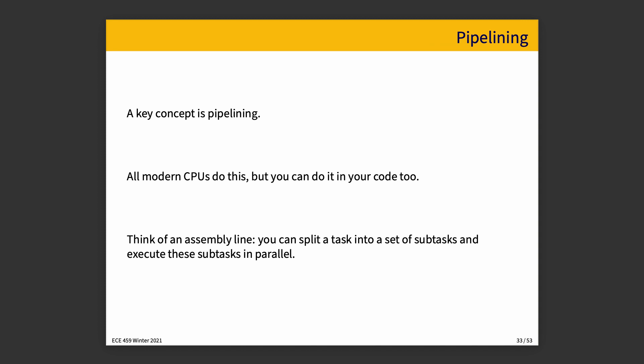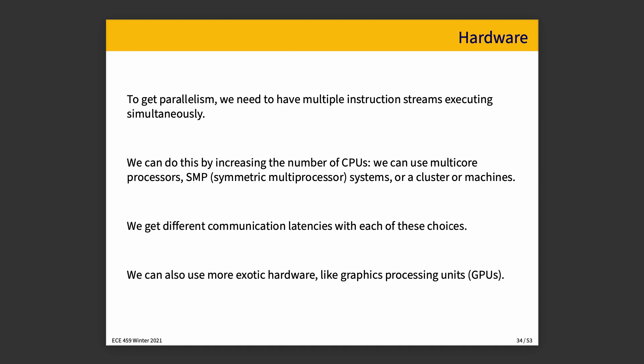Another interesting approach that modern CPUs do — and you can also do in your code — is pipelining, very much like an assembly line. You split a task into a set of subtasks and then execute those subtasks in parallel. When we get into the details about hardware, we will talk about pipelining specifically. You may have also learned about pipelining in a previous course where concurrency was discussed.